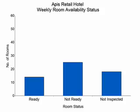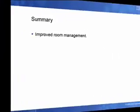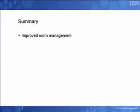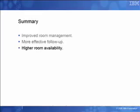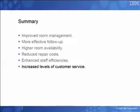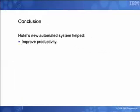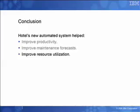With this new data and easy-to-view reports, the hotel team is well equipped to make accurate business decisions and improve their ability to compete in a growing marketplace. With Lotus Forms Turbo, Vanessa and the hotel team have achieved numerous benefits including: improved room management with more accurate operations and maintenance data, more effective follow-up on guest requests, and higher room availability; reduced repair costs and improved equipment lifespan thanks to more efficient tracking of maintenance issues; enhanced staff efficiencies and increased employee morale; and increased levels of customer service resulting in improved ability to generate new and repeat guests. The hotel's new automated room inspection system helped improve productivity and maintenance forecasts, and the automated inspection data can now be easily accessed, analyzed and used for more effective management decision-making, yielding improved customer satisfaction.